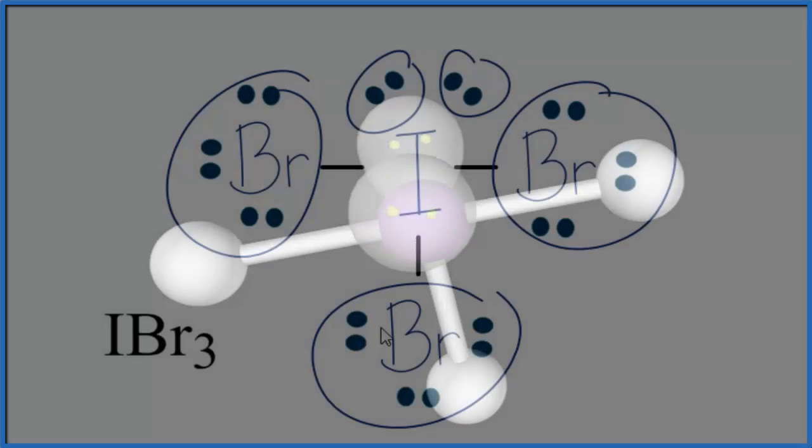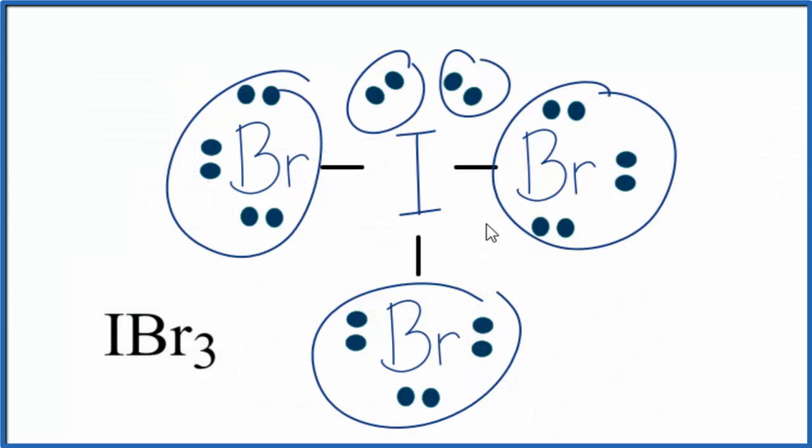Let's go back to our Lewis structure. So if we weren't able to visualize that T-shaped structure based on the repulsion of these groups here, we could look at this two other ways. First, we could count the steric groups attached to this iodine. So we have one, two, three, four, five, and two of them are lone pairs.